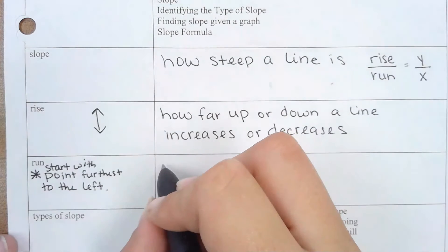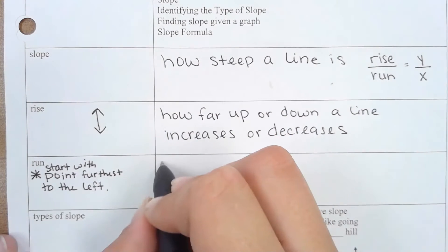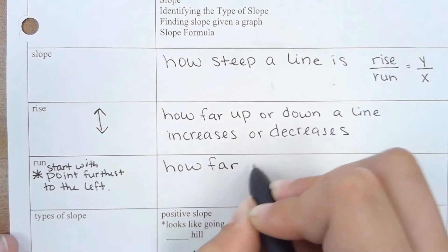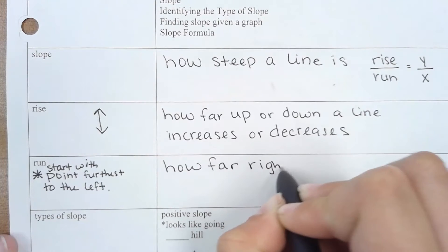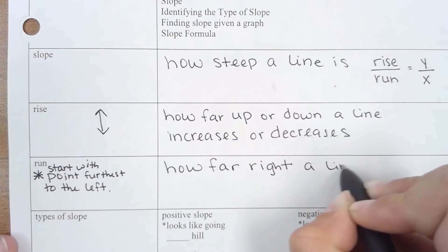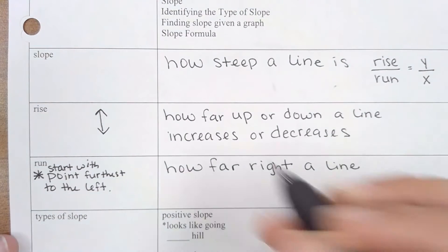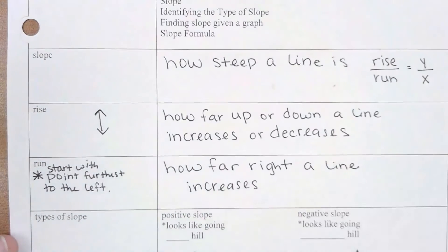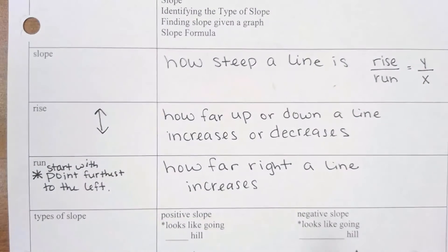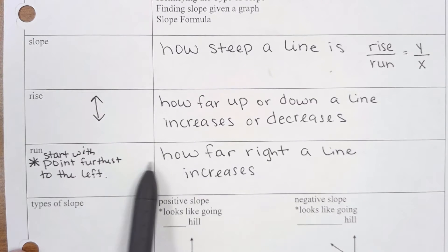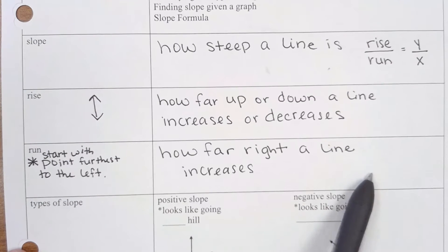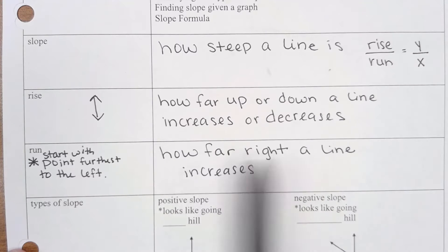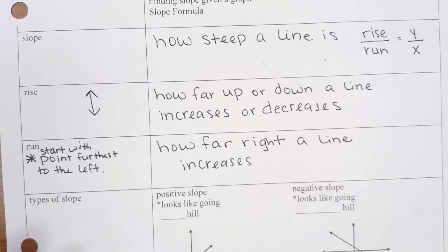When you're running, you're going to figure out how far right a line increases. We're always going to be running to the right, and when you're running to the right on a coordinate plane, that indicates a positive direction — so we're only going to be talking about how much it increases.